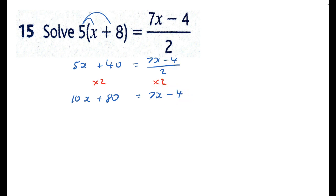Which one's got most x's? The left-hand side, so let's get rid of those 7x's. Get rid of 7x's also from the left-hand side and that'll leave me 3x plus 80 equals negative 4.